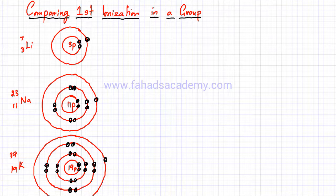In this lecture we're going to compare the first ionization energies of different elements, especially Group 1. I've drawn three elements from Group 1: lithium at the top, sodium below it, and potassium lower down. There are five or six elements in Group 1, so let's pick these three and compare how their first ionization energies are going to vary.